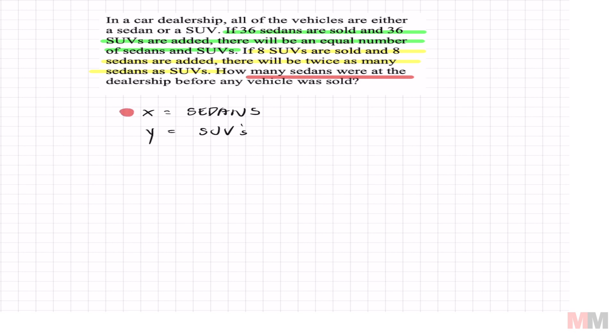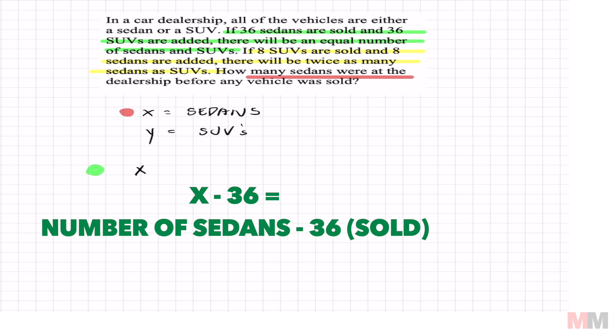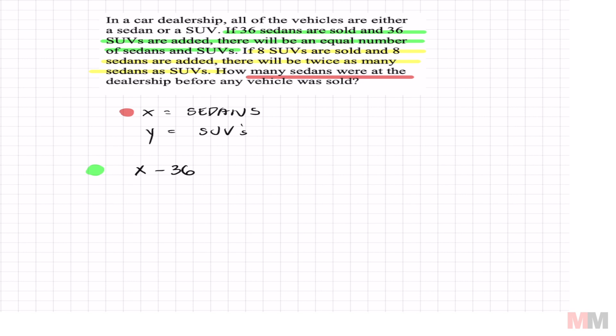Let's focus on green. And this one I think is just a direct translation, but it's a little confusing still. Biggest mistake here is that people put 36 sedans are sold. They're going to write 36 minus x, but it's actually the other way around. If 36 sedans are sold, whatever number of sedans I have, x minus 36, I'm subtracting 36 from the amount of sedans I have. That's what that is saying. Equals, because it says equal number right here, 36 SUVs are added. So whatever my SUV amount is, y adding 36. So that's my first equation.